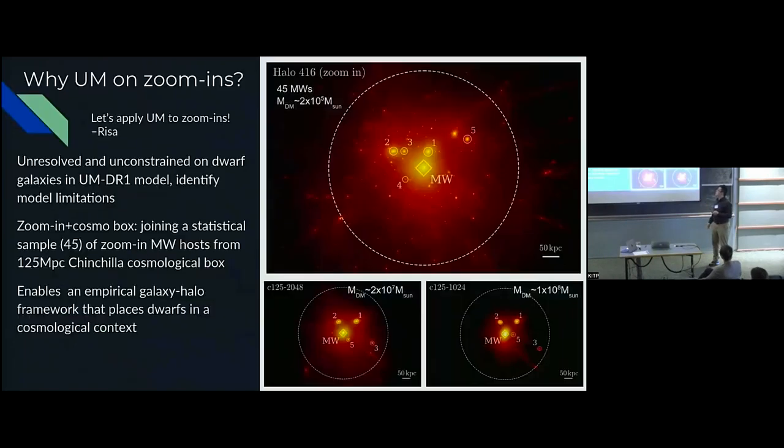The first part of my PhD work is combining UniverseMachine with multi resolution cosmological simulations. This was one of the first conversations I had with Risa when I started grad school. We have these amazing 45 Milky Way zoom-ins run at dark matter resolution of 10 to the 5. We were expecting to find inconsistencies of the model performing at these dwarf galaxy scales. This exercise is very important to identify model limitations and guide us where we need to improve.